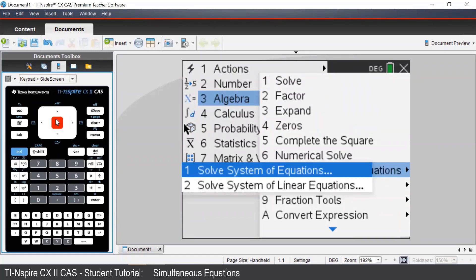We are given two options. The first option will allow us to solve simultaneous equations using any term. For example, we may have quadratic and linear terms in our equations, whereas the second option will only allow us to solve simultaneous equations involving linear terms. We will use the first option.